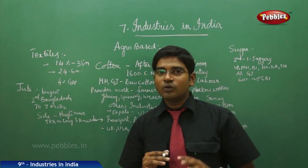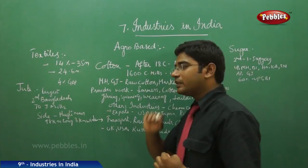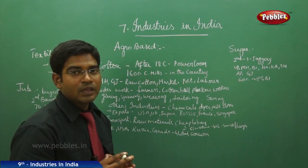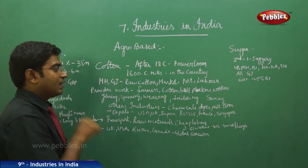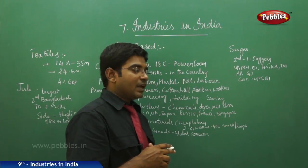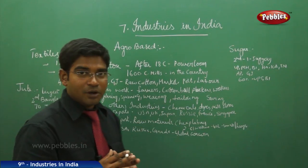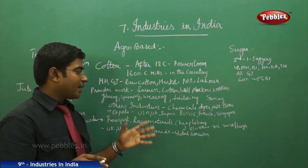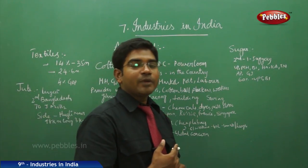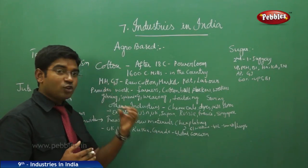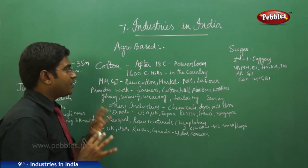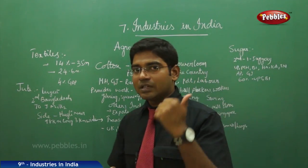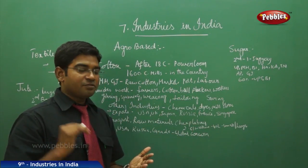Cotton provides opportunities for both agricultural and non-agricultural workers — ginning, spinning, weaving, tailoring — and also relates to other industries like chemical industries and dyeing. India stands very strong in cotton production, exporting to USA, UK, Japan, Russia, France, Nepal, and Singapore. The major reasons for Ahmedabad becoming a cotton textile hub include favorable climatic conditions, availability of raw materials, and excellent transportation.